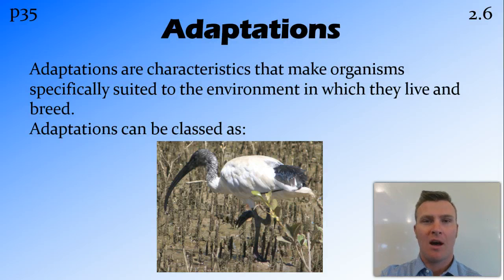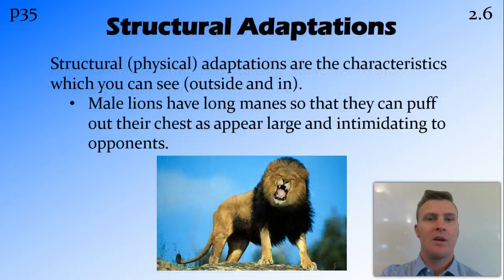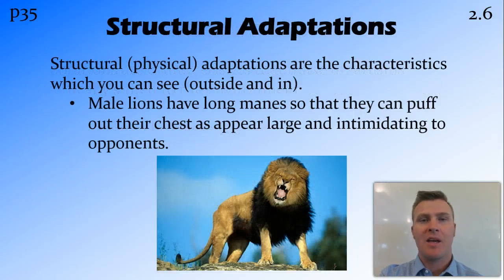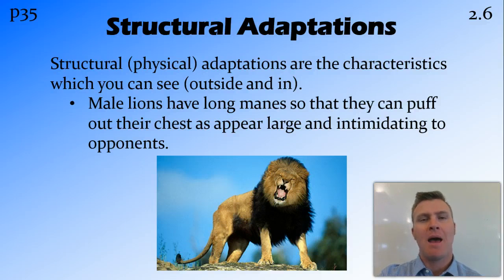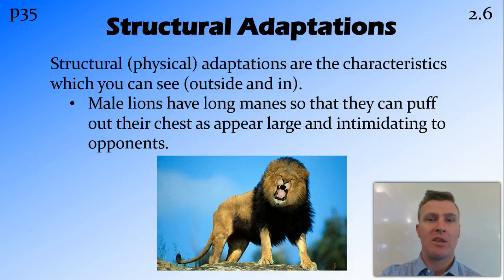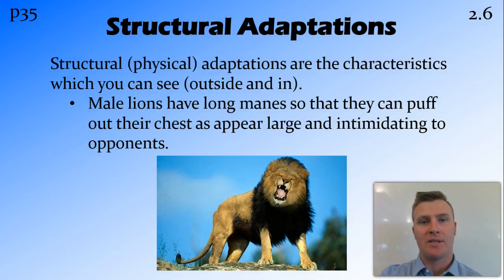There are three different types of adaptations. The first are structural adaptations, or physical adaptations. These are actual structures that you can see, and they may be on the outside of an organism or on the inside — so you can either point to it and say there it is, or you could cut it open and point to it.